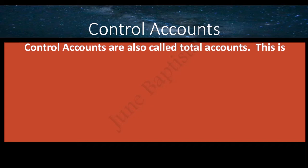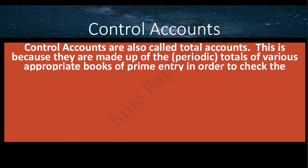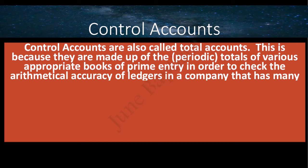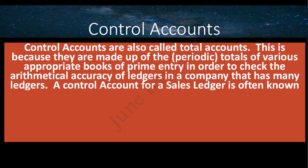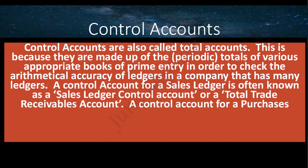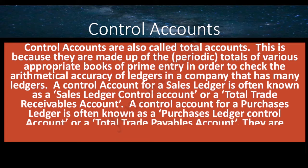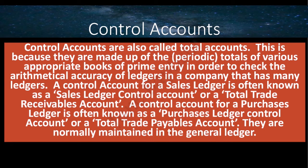Control accounts are also called Total Accounts. This is because they are made up of the totals of various appropriate books of primary entry, in order to check the arithmetical accuracy of ledgers in a company that has many ledgers. A control account for a sales ledger is often known as a sales ledger control account or a total trade receivables account. A control account for a purchaser's ledger is often known as a purchaser's ledger control account or a total trade payables account. These accounts are normally maintained in the general ledger.